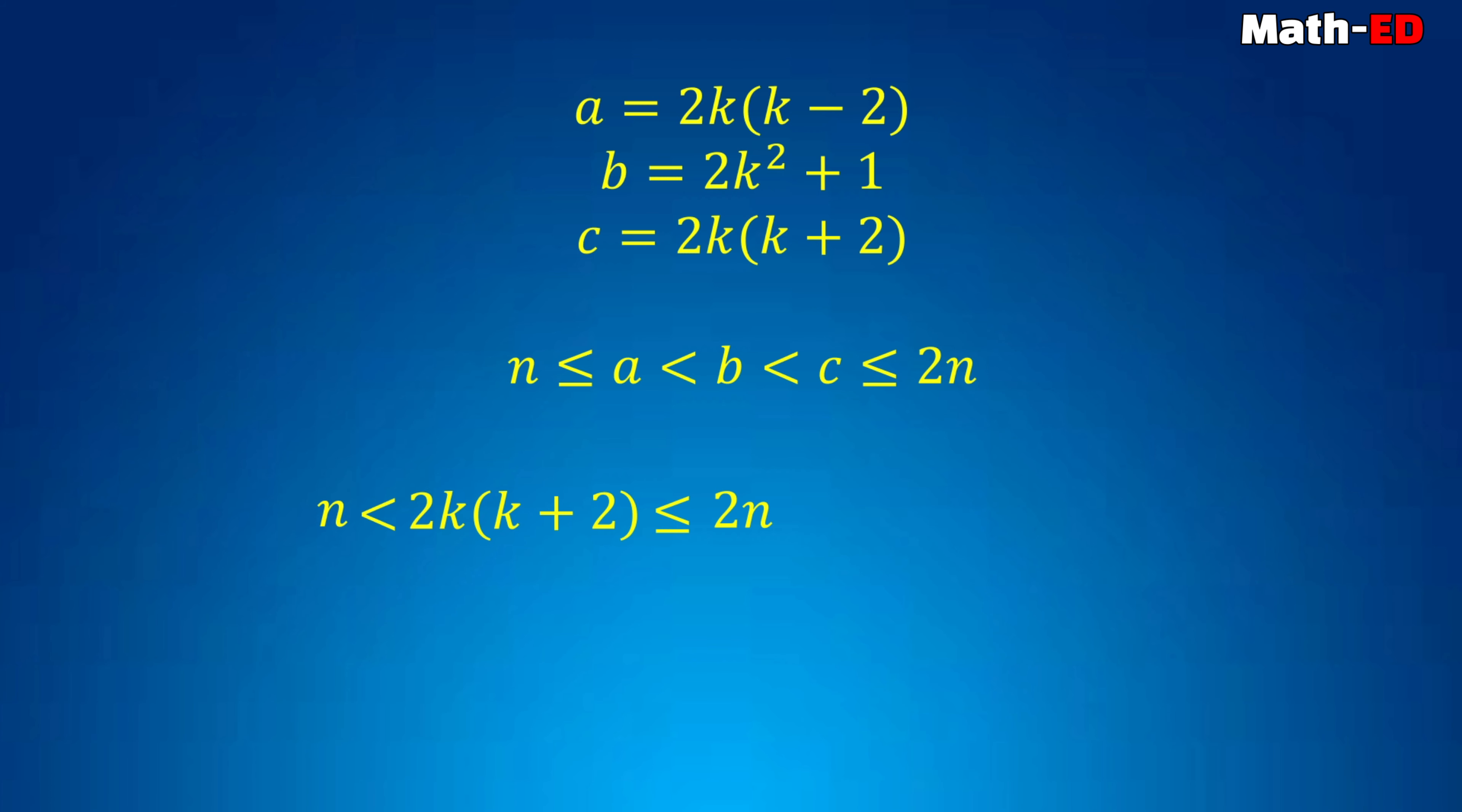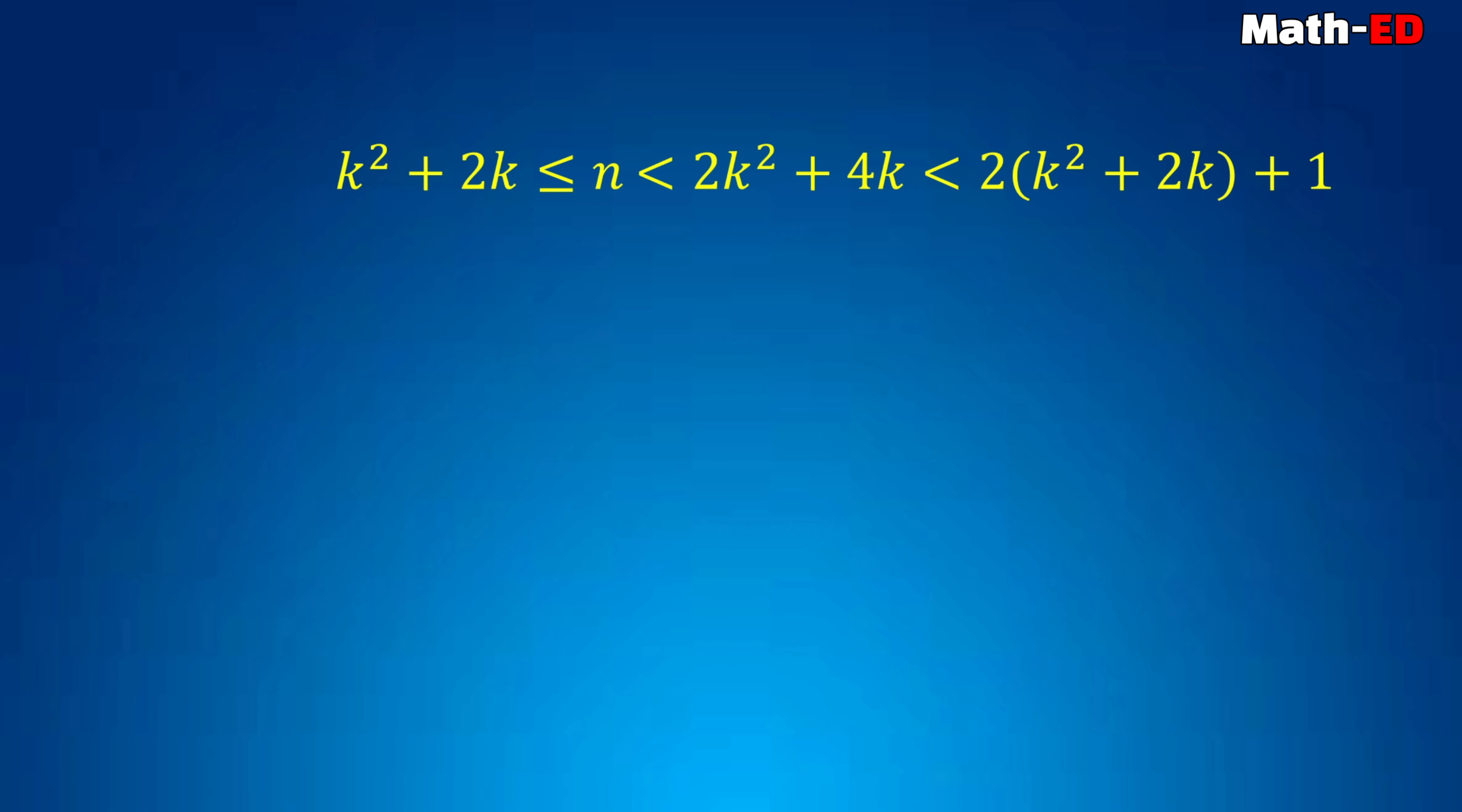So from here we can get a bound of n. That is k squared plus 2k is less than or equal to n, that is less than 2k squared plus 4k, which is again less than 2k squared plus 4k plus 1.